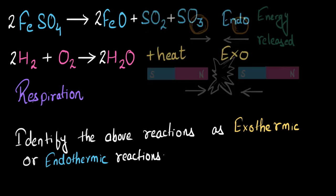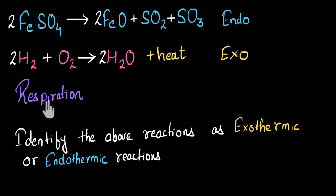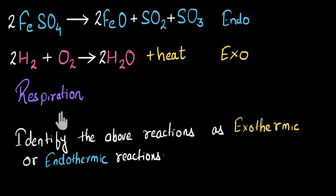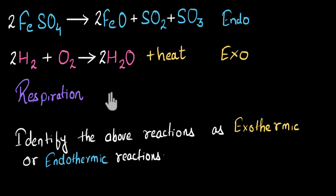Now let's solve the last part: respiration. This is the process by which our cells break down glucose, and in the process we gain a lot of energy which we can use to run, play, and do all sorts of activities. Since this process gives out energy, we call it an exothermic process.